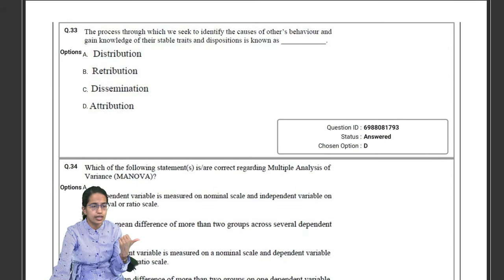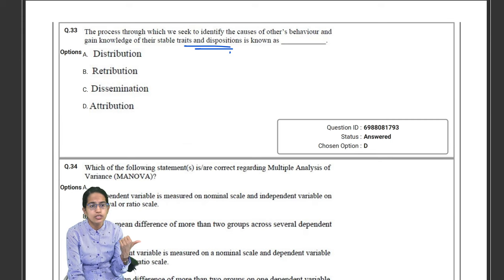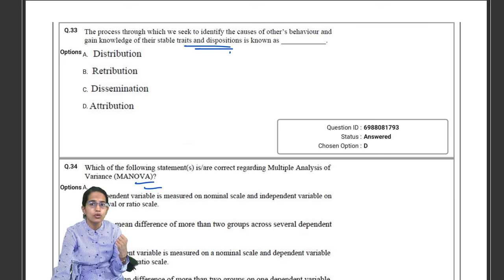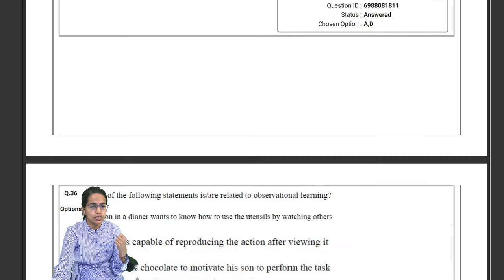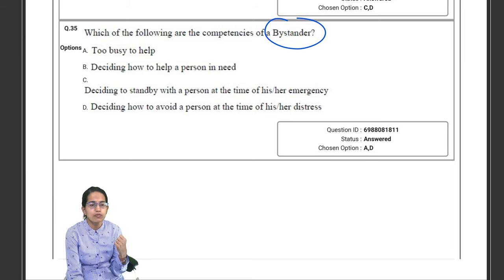Memory, so it is the encoding and retrieval. So the next was how there are traits and dispositions and the process through which we actually identify those.